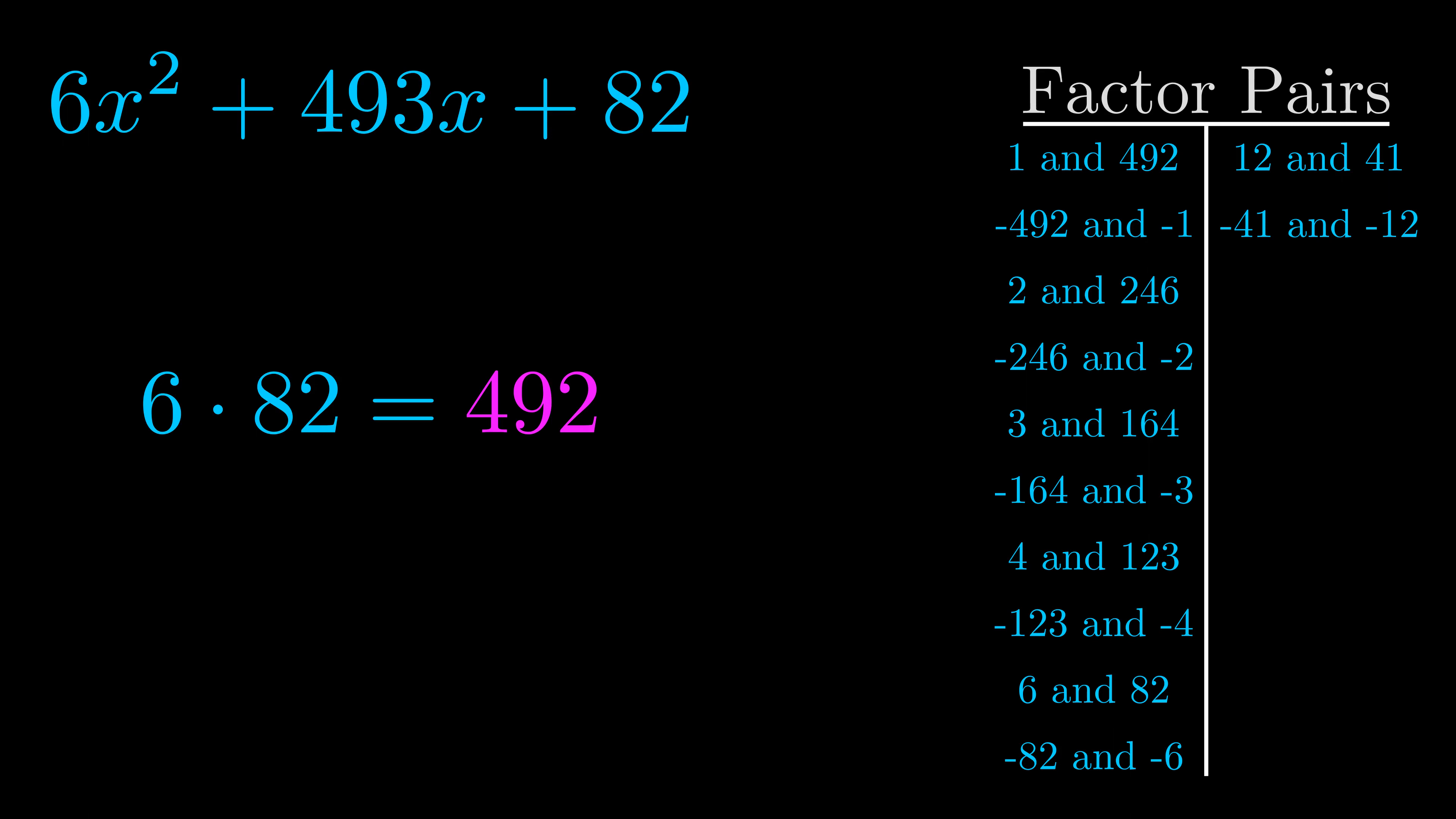The b value is the coefficient on the x term. That's the middle term, the one that we haven't done anything with yet. And really this is the only factor pair that we need.